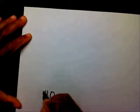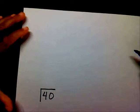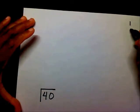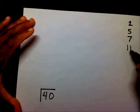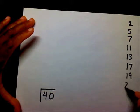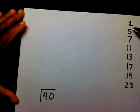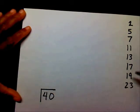Let's try a larger number — let's try 40. Find the prime factorization of 40. The factors you need to focus on are the prime numbers: 2, 5, 7, 11, 13, 17, 19, and 23. If you can remember these prime numbers, then you'll be great. Starting with the smallest one, 2 will go into 40 evenly, so I'm going to write a 2 here.